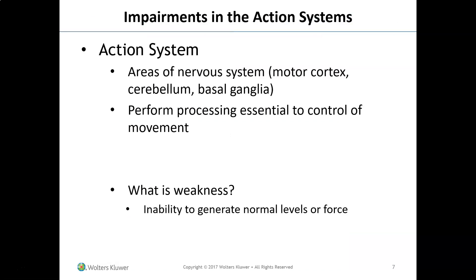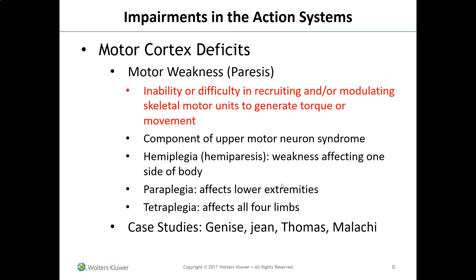Impairments of the action system — which includes the motor cortex, cerebellum, and basal ganglia — involve areas that perform processing essential to the control of movement. Weakness is defined as the inability to generate normal levels of force. Motor cortex deficits involve the inability or difficulty in recruiting and modulating skeletal motor units to generate torque or movement, and are a component of upper motor neuron syndrome.